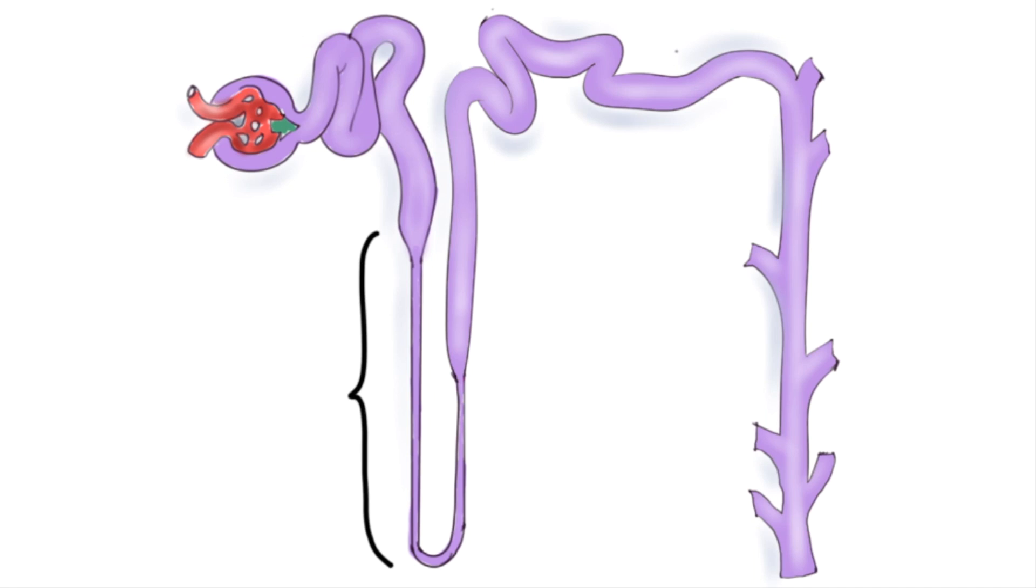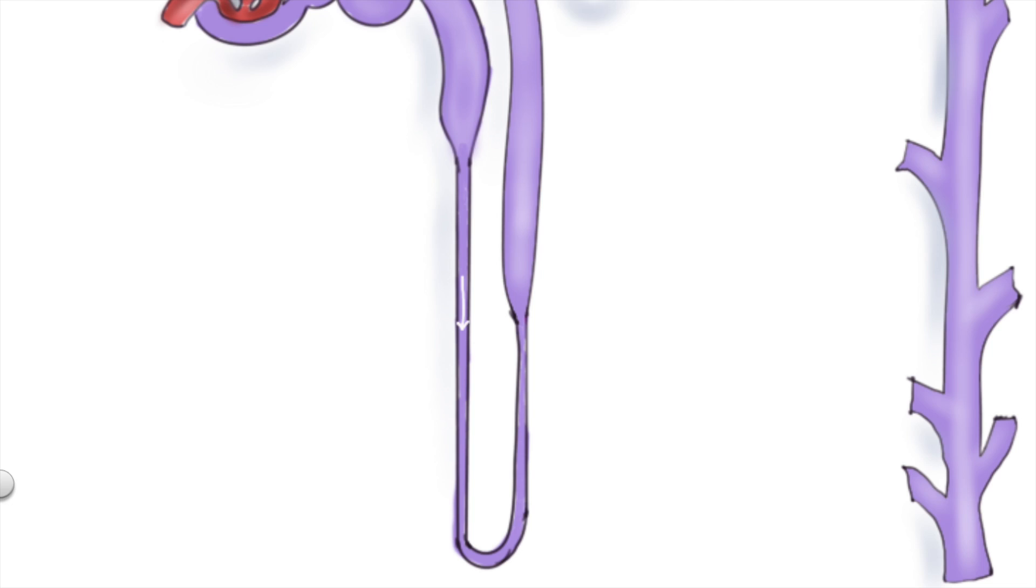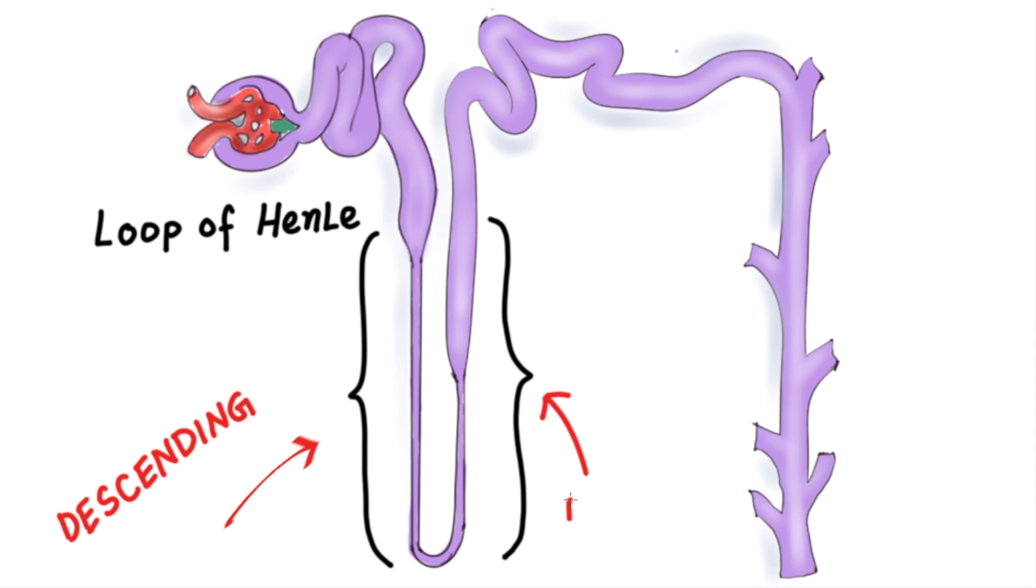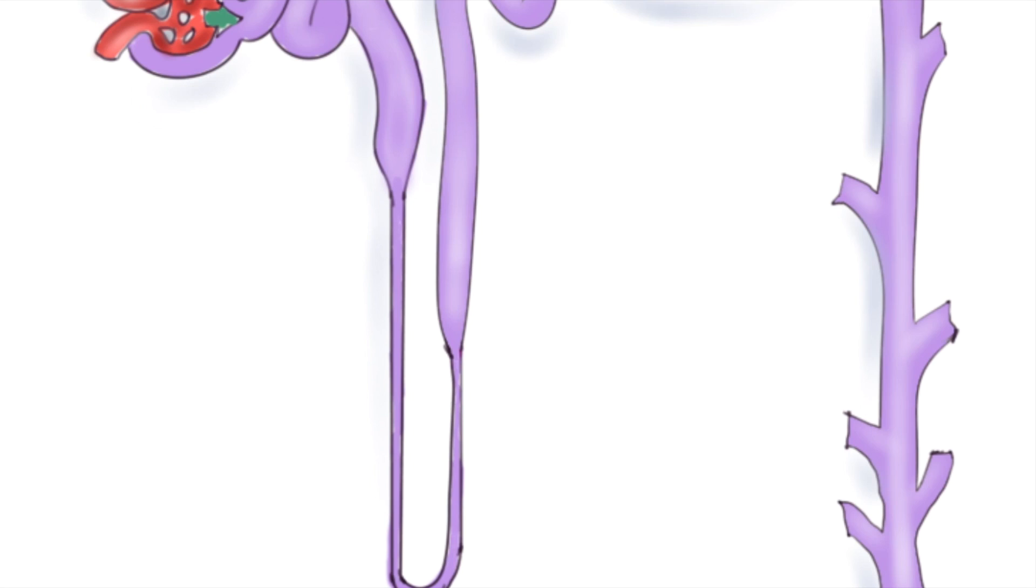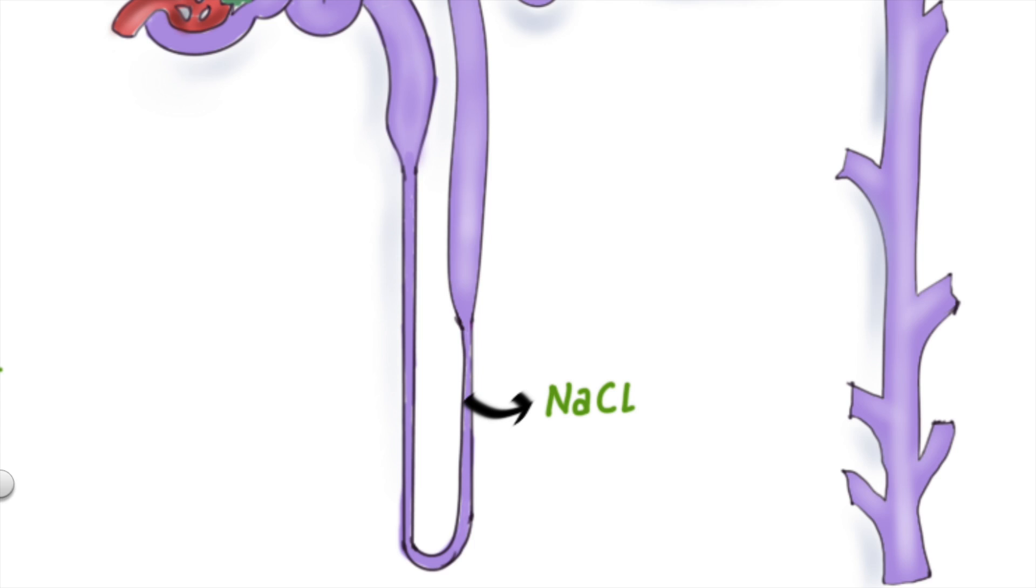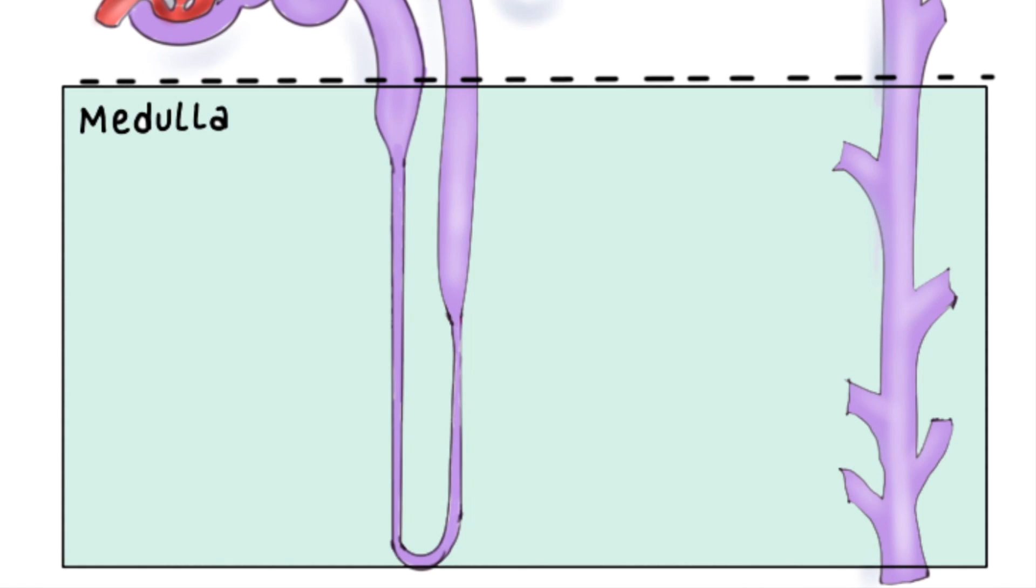The next part of the nephron is the loop of Henle, which has a descending limb in which filtrate travels down and an ascending limb in which filtrate travels up. The thin segment of the loop is lined by squamous epithelium. Now, the loop of Henle dips down into the region of kidney known as medulla. This region is highly salty. Why? Because sodium is actively pumped out of the thick ascending limb followed by chloride.